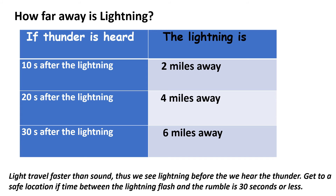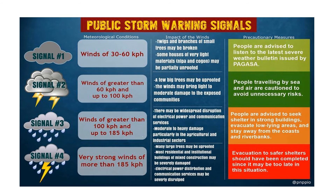If the time between the lightning flash and the rumble is 30 seconds or less, look for a safer place to be safe from lightning and thunder. For your awareness, we also have here the public storm warning signals. For Signal Number 1, winds of 30 to 60 kilometers per hour — twigs and branches of small trees may be broken, and some houses of very light materials like nipa or cogon may be partially unroofed.